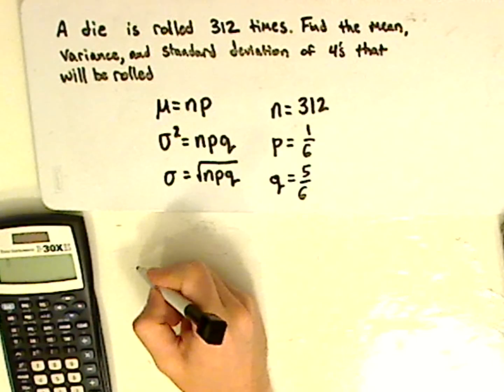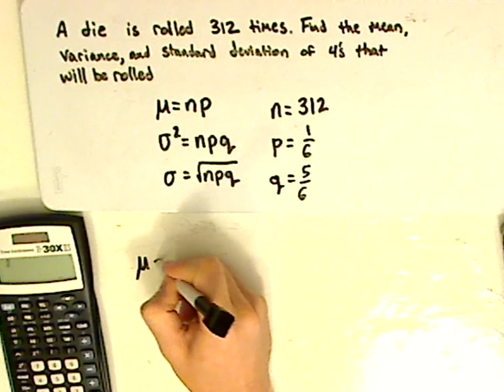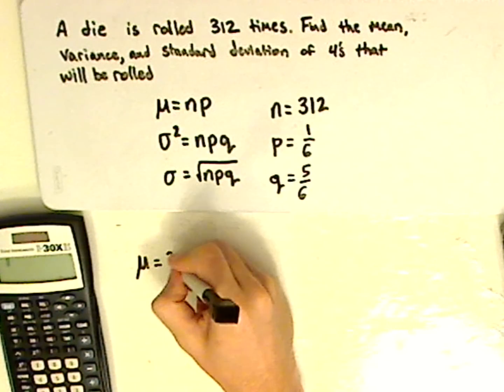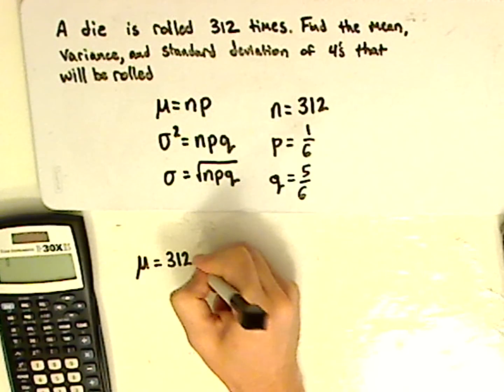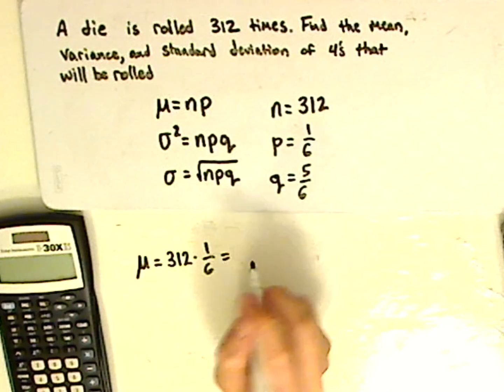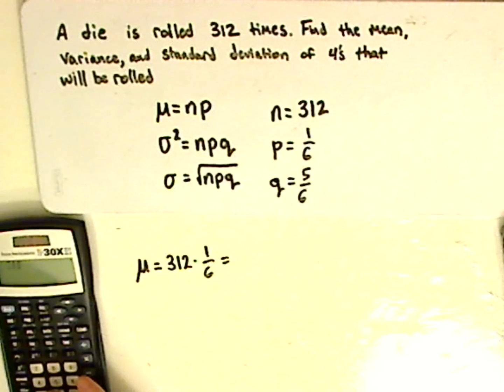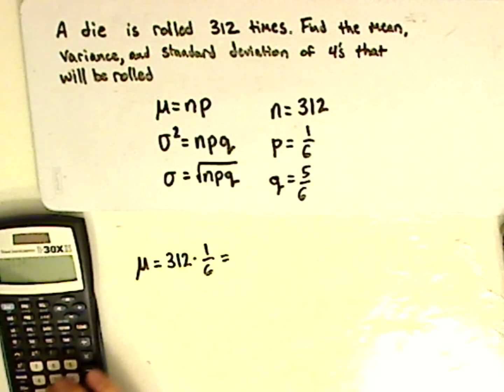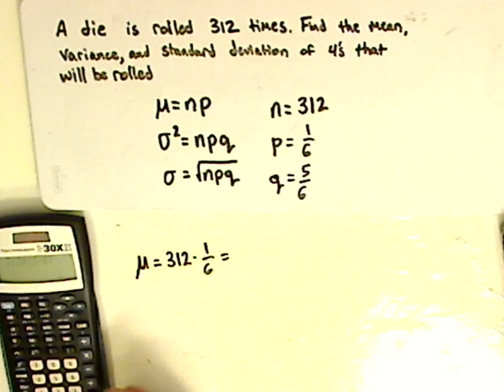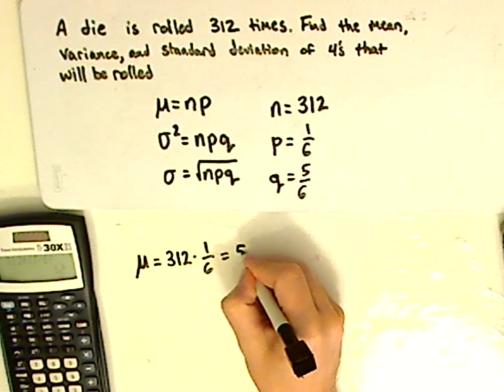All right, so to find the expected value, or the mean, the number of trials is 312 times 1 over 6. So I have 312 times 1 over 6, which is 52.